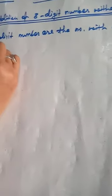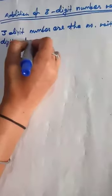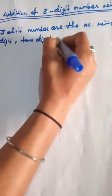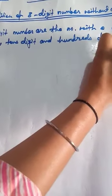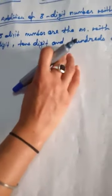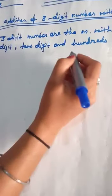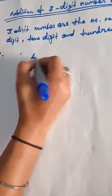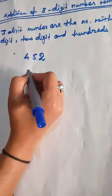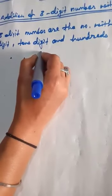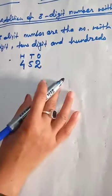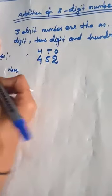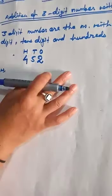We talk about three digit numbers. Three digit numbers are the numbers with the unit digit, tens digit, and hundreds digit. For example, 452. The three places are ones, tens, and hundreds. Now we are adding two numbers without carrying.